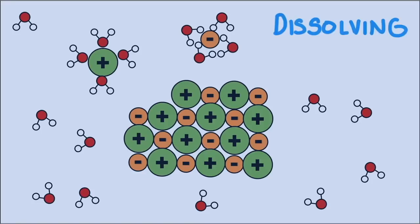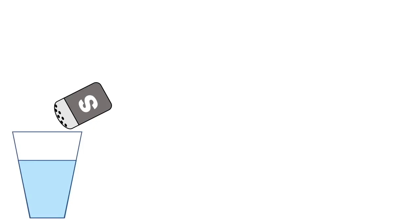This is the dissolving process, when individual particles of the substance separate and get surrounded by water molecules. Now the particles are too small to see, and that's why a dissolved substance is invisible. They're still there, they're just too small and spread out.